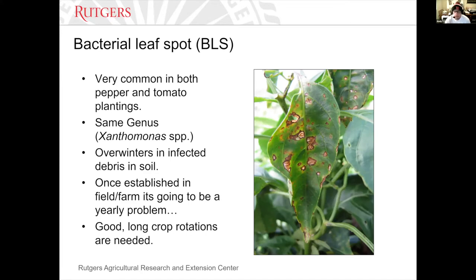I want to start off talking about bacterial leaf spot of pepper and tomato. As you know, it's very common in both plantings. The bacteria is caused by the same genus of bacterium, Xanthomonas. Once it's on your farm, it'll overwinter in infected debris in the soil. So once you have it, it can be problematic for many, many years. The best way to manage this is to do long, good crop rotations, avoiding other susceptible hosts — which some growers in South Jersey have a problem with because we grow so many bell and non-bell type peppers.